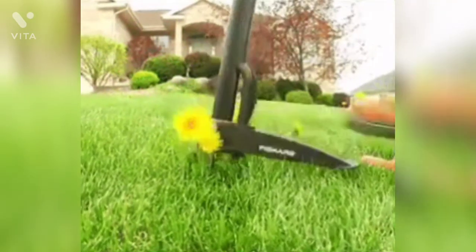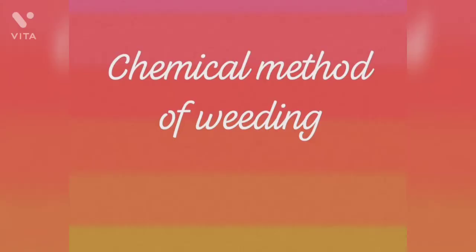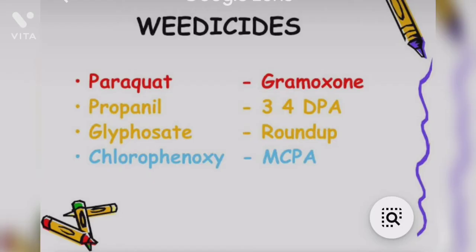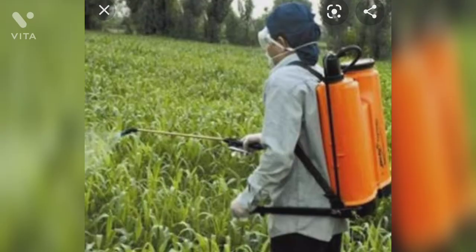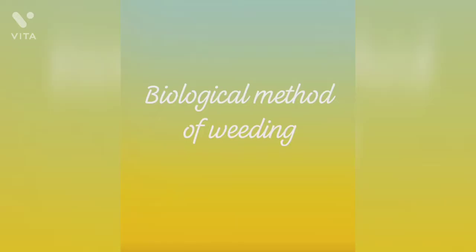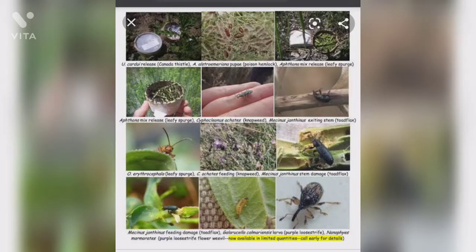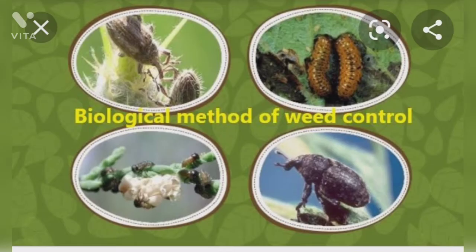Another method is the chemical method — weed-killing chemicals called weedicides are sprayed on weeds in the field to destroy or kill them. Some common weedicides are 2,4-D and CPA. The next method is the biological method of weeding, where insects or other organisms that specifically consume and destroy the weed plant are introduced in the crop fields. This is called biological control of weeds.